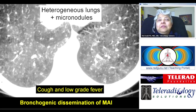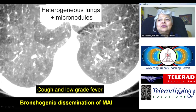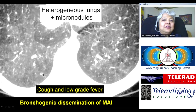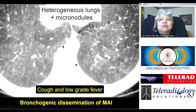This patient has bronchogenic dissemination of atypical mycobacteria, presenting with cough and low-grade fever. The lungs are heterogeneous and there are micronodules clustered within lobules. There are clusters of micronodules — way too many to be blood vessels in the subpleural lung zone. This is a patient with heterogeneous lungs due to varying aeration in bronchogenic dissemination of MAI.